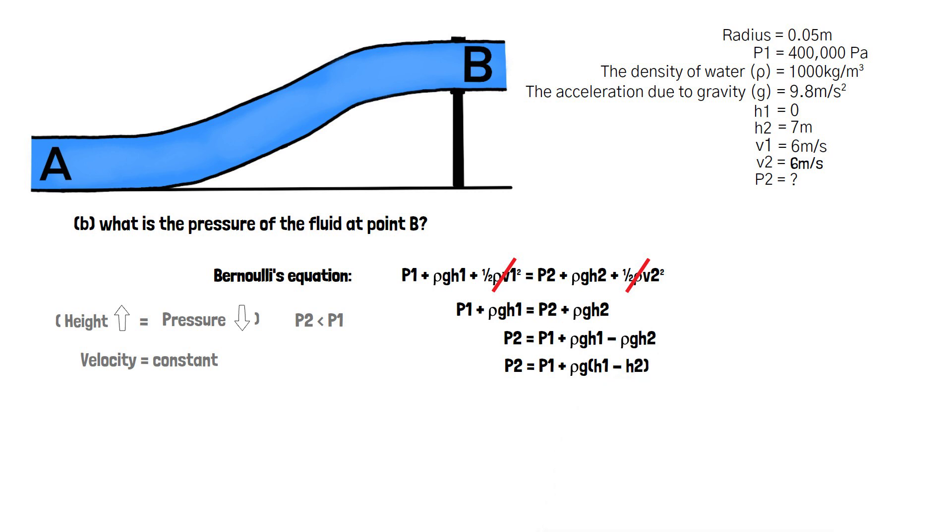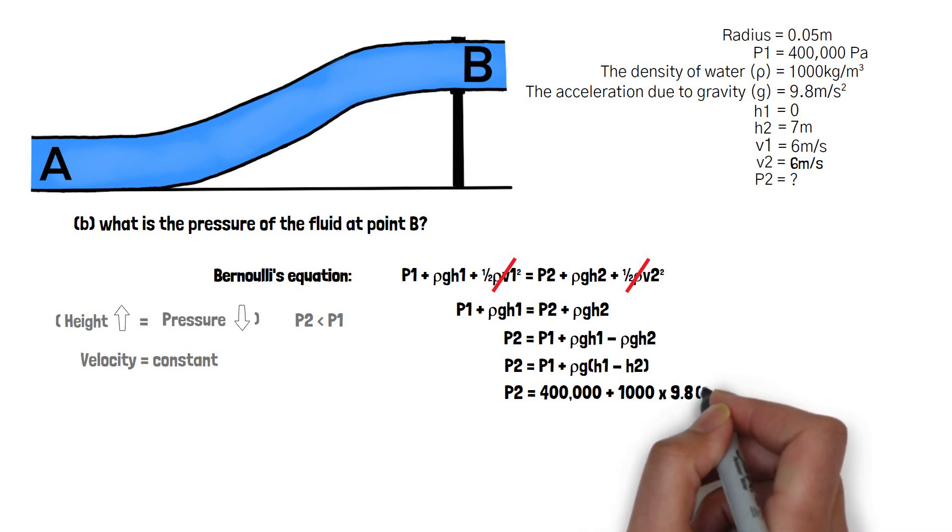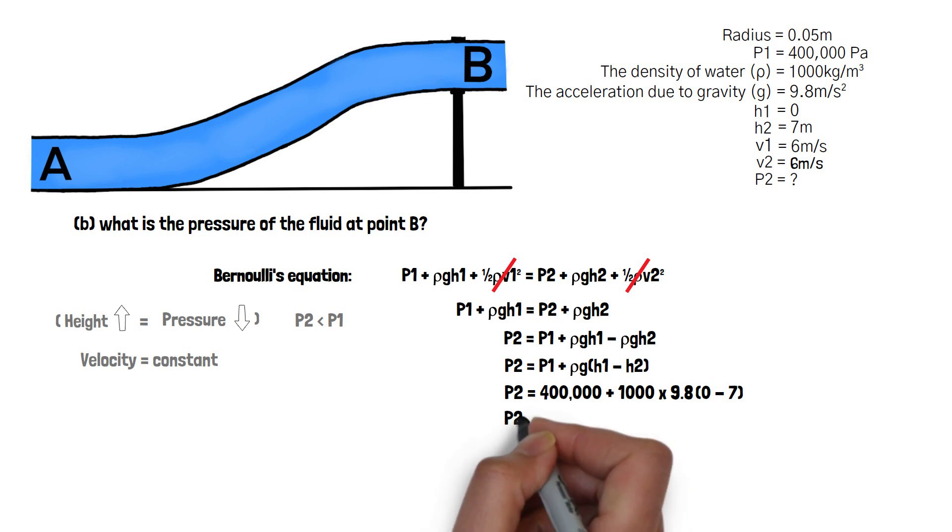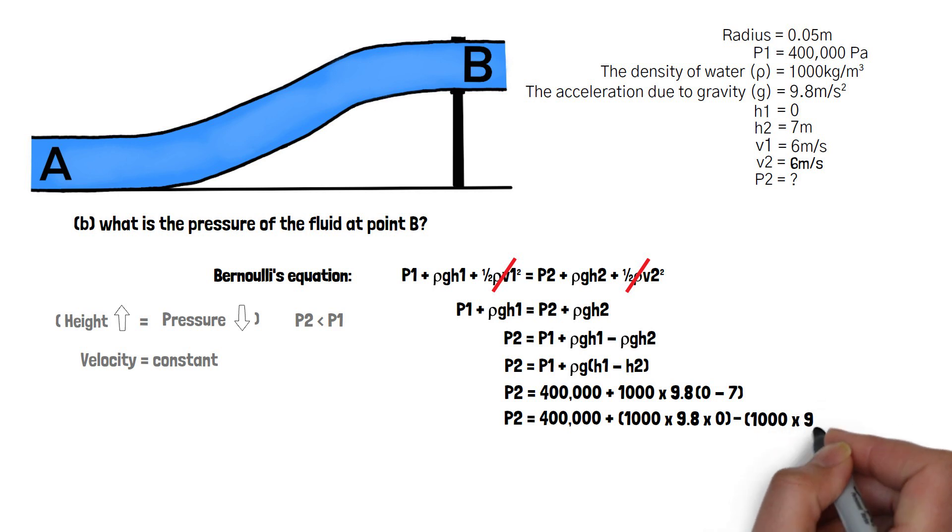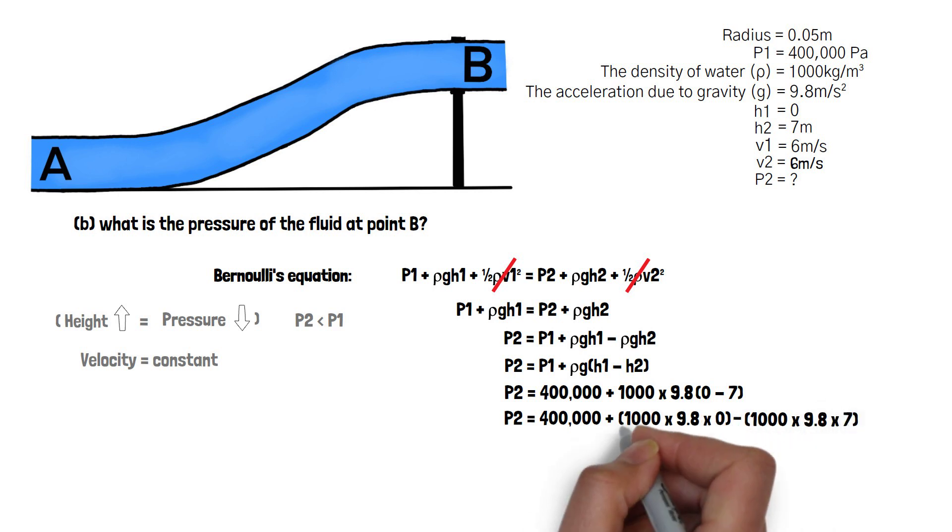Once this is done we can go ahead and plug our numbers in to find P2. So we know that P1 is 400,000, ρ is 1000, g is 9.8, H1 is 0, and H2 is 7. Multiplying out our brackets gives us 400,000 + 1000 × 9.8 × 0 - 1000 × 9.8 × 7. As the contents of the first bracket are multiplied by 0, the value for the whole bracket is 0 and can be cancelled out. So this equation becomes P2 = 400,000 - 68,600 which equals 331,400 pascals.